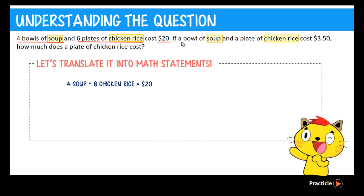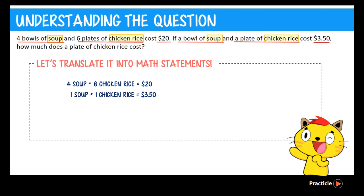We also know that if we were to buy 1 bowl of soup and 1 plate of chicken rice, we have to pay $3.50. So we write that as: 1 soup + 1 chicken rice = $3.50. After writing these two statements, do you notice anything similar between them? Both of them consist of a certain number of soup and a certain number of plates of chicken rice, and the total cost of each combination is given. This question actually gives us two relationships between the bowls of soup and the plates of chicken rice — the first on top and the second below.